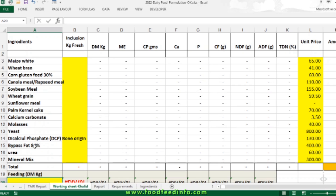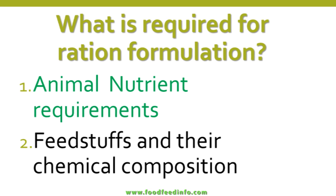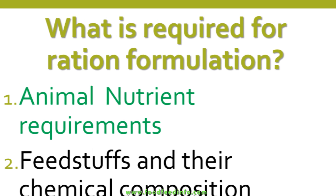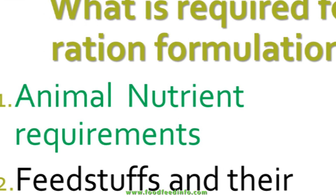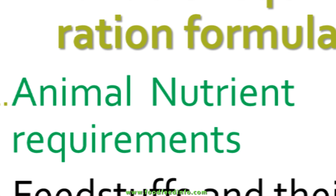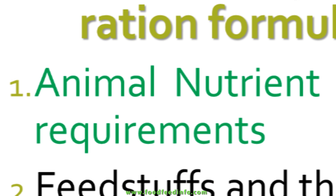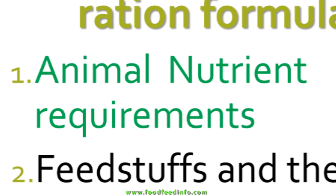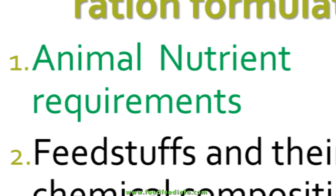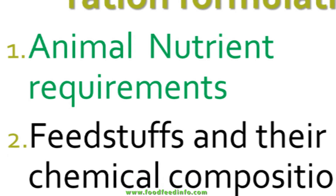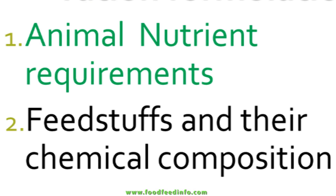By adding a component from the roughage — either in the form of green fodder or hay — you are able to formulate a total mixed ration. When we talk about diet formulation, we need two things: first, we should know the nutrient requirement of that particular individual, and second, we should know the available feedstuffs and their chemical composition. This sheet is designed to provide both at the same time.